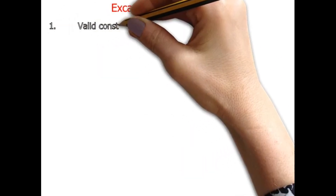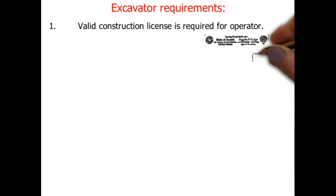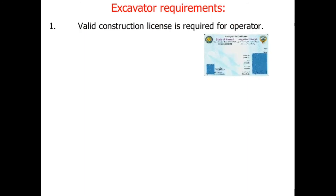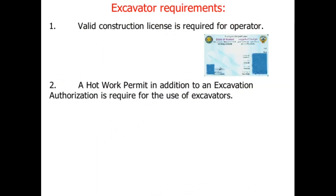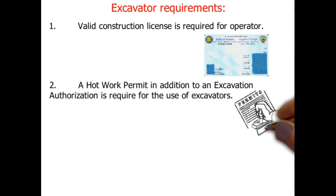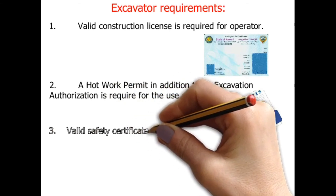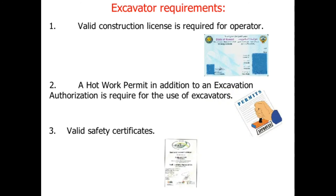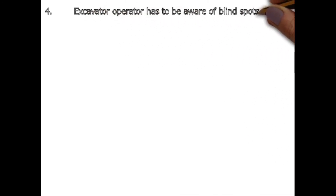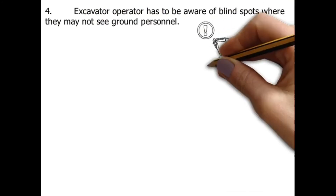Excavator requirements: one, a valid construction license is required for the operator; two, a hot work permit in addition to an excavation authorization is required for the use of excavators; three, valid safety certificates; four, the excavator operator has to be aware of blind spots where they may not see ground personnel.